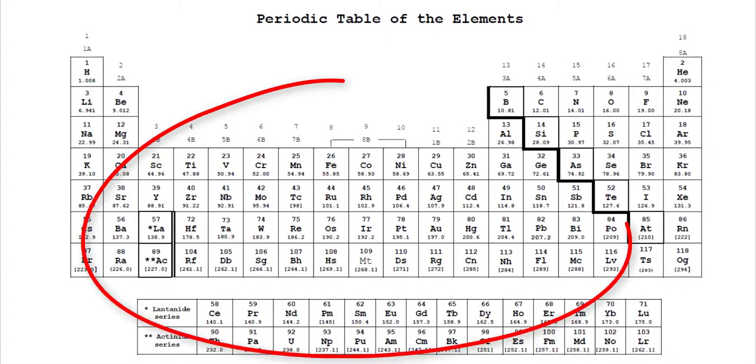The elements that are shown in the middle of the table are our transition metals. The majority of transition metals can have multiple charges on them.